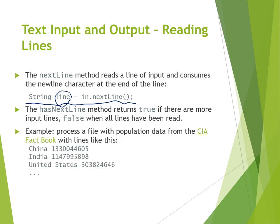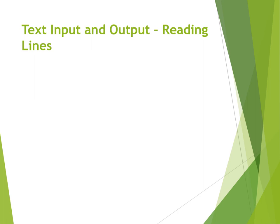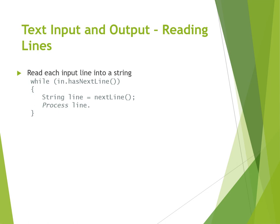The example we will look at carefully in the next slides involves processing a file with population data from the CIA Factbook, with lines like: "China [population]", "India [population]", "United States [population]", and so on. Each line has one country followed by a space and its corresponding population. Let's see how we can read the country names and populations from each line.